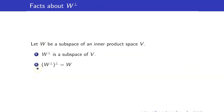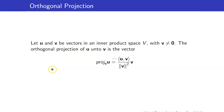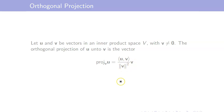Similarly, W-perp is a subspace of your inner product space V, and the orthogonal complement of the orthogonal complement of a subspace is itself. We can also define the projection of a vector u onto a vector v. It is defined as the inner product of u and v over the square of the length of v, times the vector v.